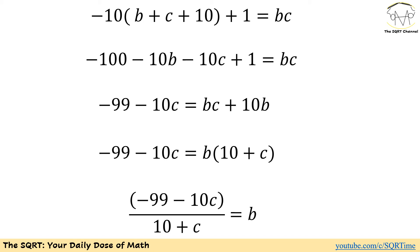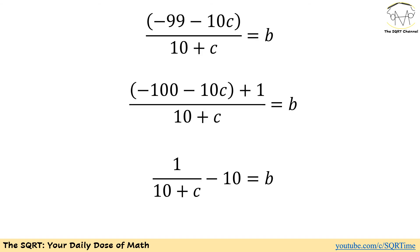Remember, c cannot be -10 here. We're going to evaluate that later when we found all values. There is a trick here that I'm going to apply to overcome the barrier that we have. We have (-99 - 10c)/(10 + c) = b.